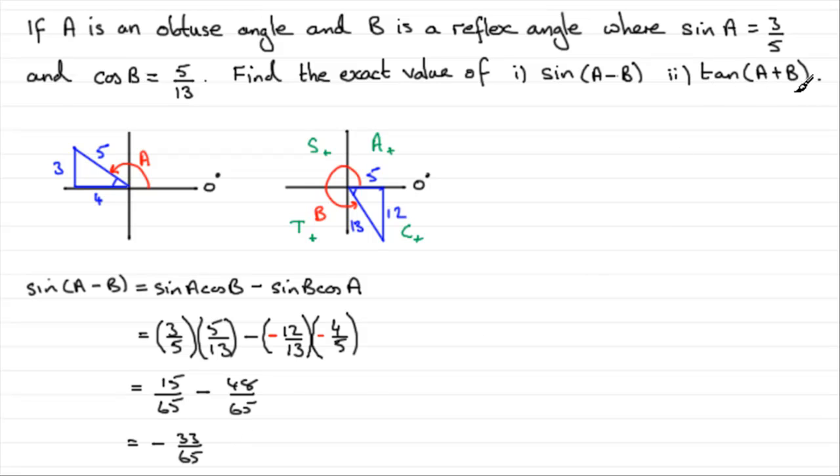You might like to try this one now. The tan of A plus B. So, just pause the video if you want to have a go. Okay. Well, let's just see, if you had a go, how you got on. So, tan of A plus B. Hopefully, again, you know the identity for this. It's the tan of angle A plus the tan of angle B, all divided by 1 minus the tan of A times tan of B.